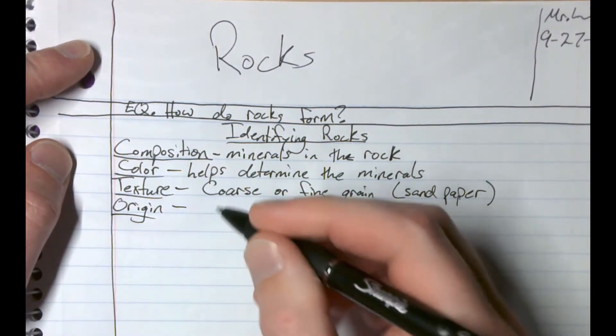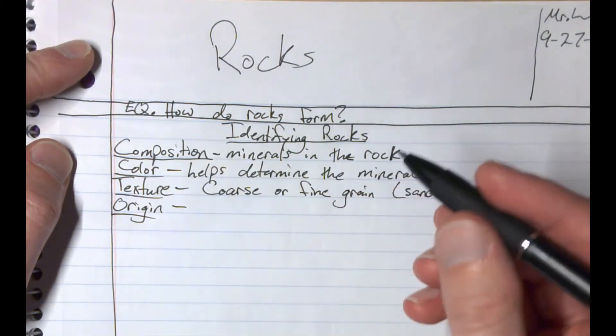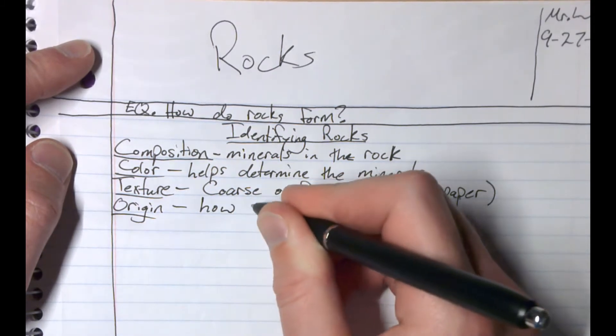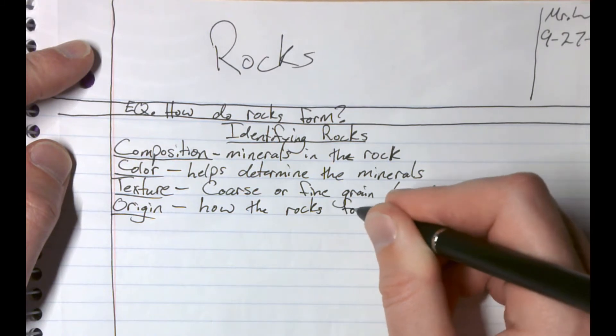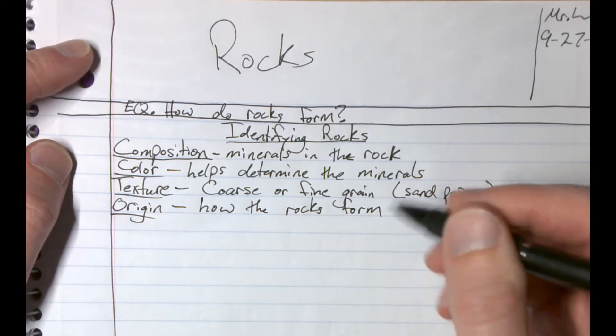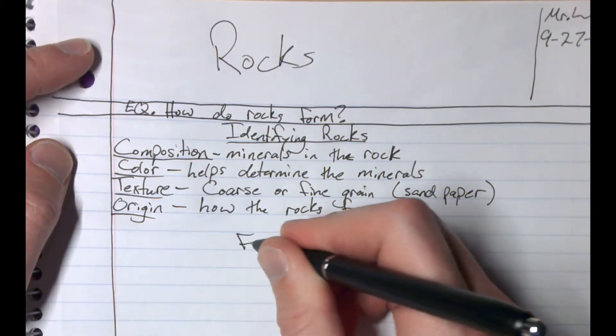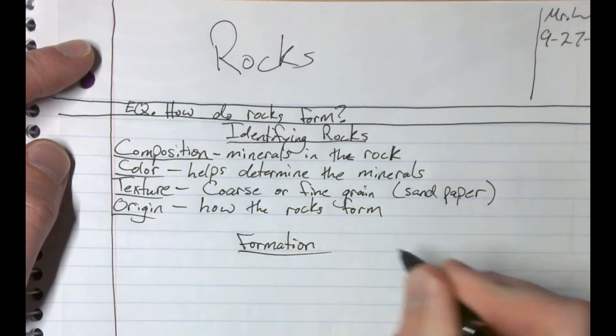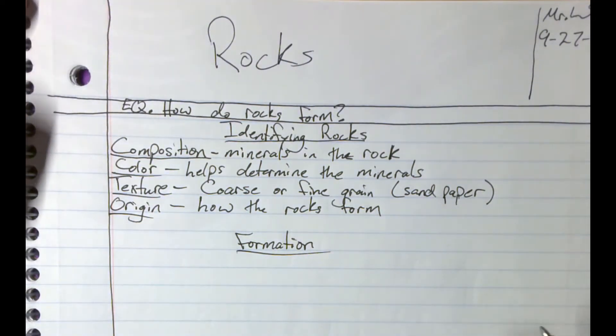And then the origin, this might be one of the more important ones. The origin is how the rock is actually formed. So then how do we form the rocks? That's the next thing we're going to talk about. So the next thing we need to talk about is formation.